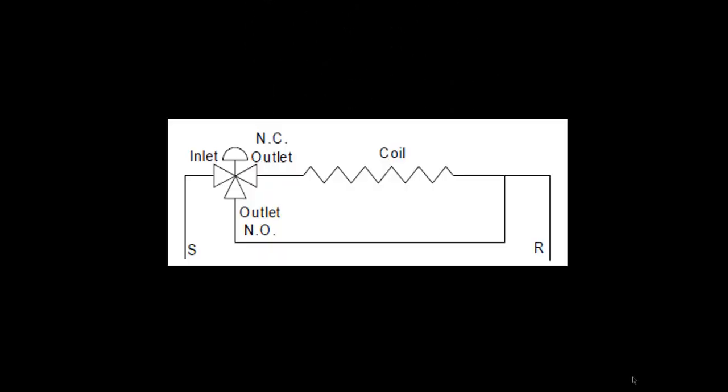Diverting valves in bypass applications are placed upstream of the coil. The supply water enters the inlet port and is directed to either the coil branch or the bypass branch, depending on the signal from the controller to the valve actuator.